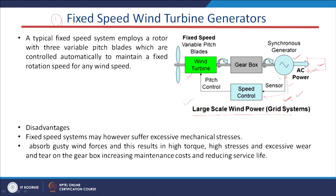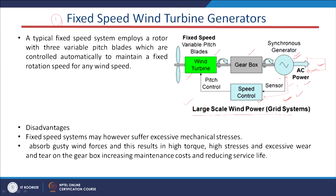If you could see this block diagram of the fixed speed wind turbine generator, here we have the wind turbine, the gear box, the speed control mechanism, and the synchronous generator. With this arrangement we can achieve the electrical output from the generator; however, power electronics interfacing devices are not present here.